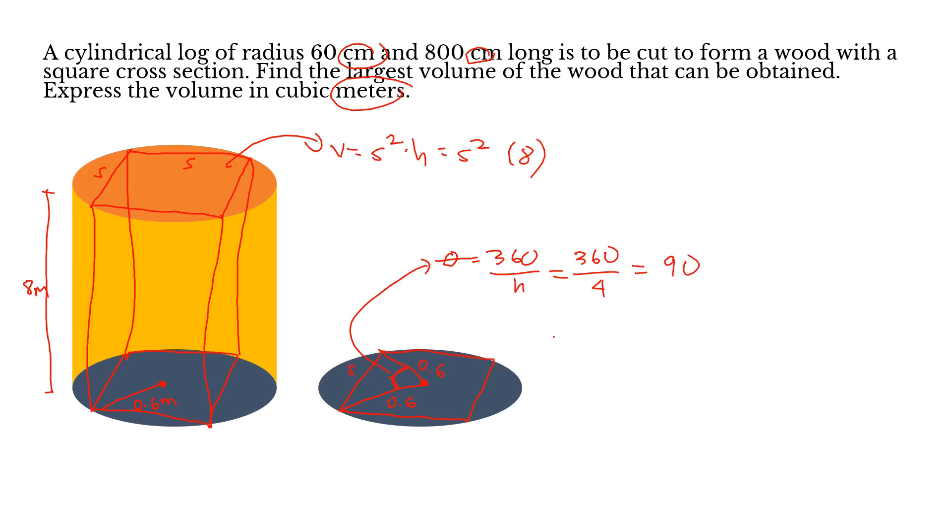Therefore, this forms a right triangle. Here is S, and the hypotenuse is 0.6, 0.6 on each side. So we can solve for S by Pythagorean theorem: x² = 0.6² + 0.6². S² equals 0.72. Therefore, the volume, which is S² times height, is 0.72 × 8 = 5.76 cubic meters. And that's it for cylinders.